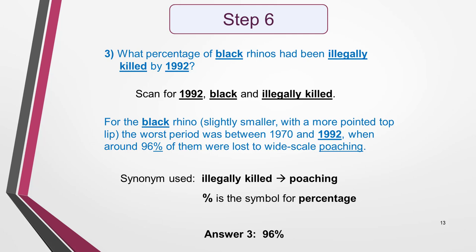Question 3 contains a date — 1992. Dates are always useful as keywords, as they are easy to spot when skimming and scanning. I also think that the word 'black' is important, as the text so far has been about white rhinos. I underline 'illegally killed' as well, as this is the main idea of the question. Both 'black' and '1992' are easy to find and lead me to the sentence with the answer: 'For the black rhino, slightly smaller with a more pointed top lip, the worst period was between 1970 and 1992, when around 96% of them were lost to wide scale poaching.' However I don't see 'illegally killed', so I need to think about synonyms — the term 'poaching' has been used instead. The other synonym I need to know is the % symbol used instead of the word. Once I've worked these out, the answer is clear: it's 96%.